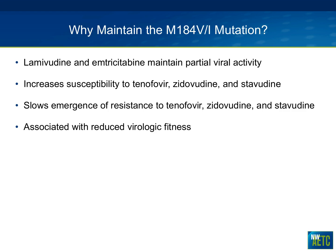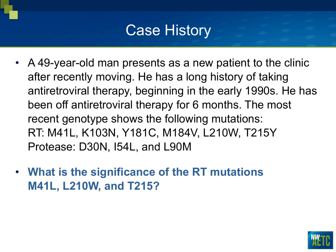To summarize the M184V: there are several reasons to maintain it if it occurs. First, lamivudine and emtricitabine maintain partial antiviral activity. Second, M184V increases susceptibility to tenofovir, zidovudine, and stavudine — you get more action out of tenofovir with 184V on board. Third, it slows the emergence of resistance to tenofovir, zidovudine, and stavudine. Fourth, it is associated with reduced virologic fitness, contributing to clinical benefit.